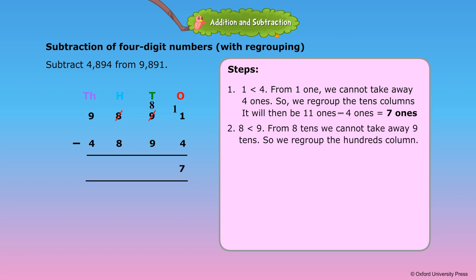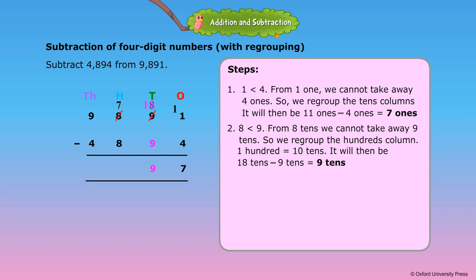Step 2: 8 is less than 9. From 8 tens, we cannot take away 9 tens, so we regroup the hundreds column. 1 hundred is equal to 10 tens. It will then be 18 tens minus 9 tens is equal to 9 tens.